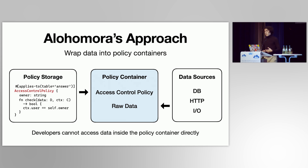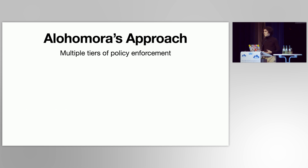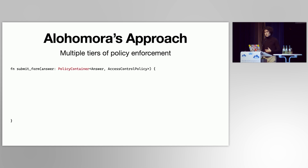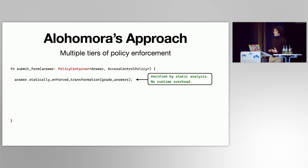Alohomora prevents developers from accessing the data inside the container directly. In our prototype we use Rust, and Rust's encapsulation and memory safety provide those guarantees. Alohomora provides multiple ways to safely interact with the data inside a policy container. For example, at an endpoint where students submit answers, you might want to auto-grade those answers. Alohomora can statically verify that data is not leaked during this simple operation, so it runs as-is with no runtime overhead.